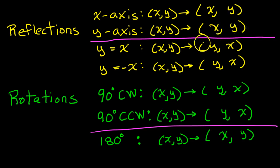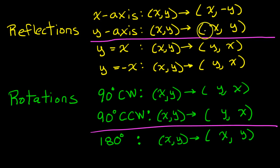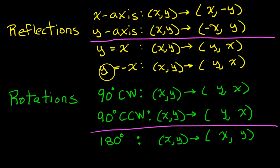Now all we have to worry about are the signs. If I put down a negative sign, I won't say negative x or negative y — I will say the opposite of x or the opposite of y, and I recommend you do the same to avoid a common mistake. When you do a reflection over the x-axis, the x value stays the same but you have the opposite of y. If it's a reflection over the y-axis, the y value stays the same and you have the opposite of x. When you reflect over y equals x, it's just y, x — you don't take the opposite of either. If you do the reflection over the downward diagonal line y equals negative x, it's going to be the opposite of y and the opposite of x.